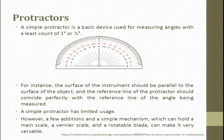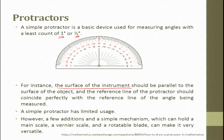A simple protractor is one where we fix at the center — in school days we used this. We have angles varying from 0 to 180 degrees, which can continue up to 360 degrees. The least count can be 1 degree; for a large diameter protractor, it can be close to half a degree. The surface of the instrument should be parallel to the surface of the object, and the reference line of the protractor should coincide perfectly with the reference line of the angle.